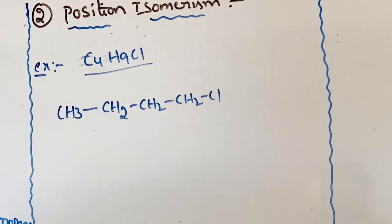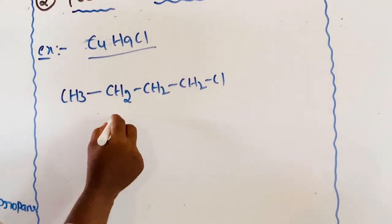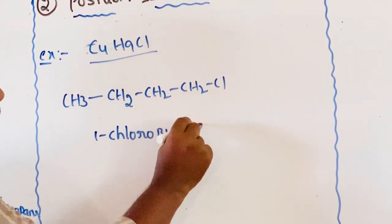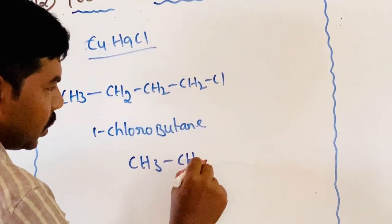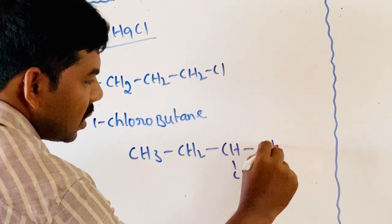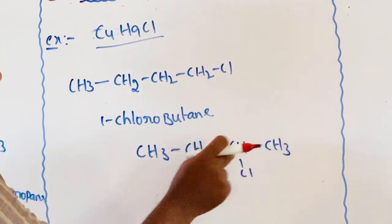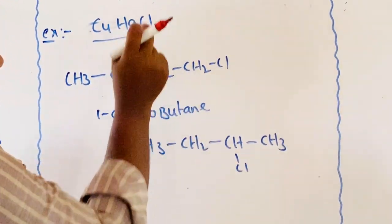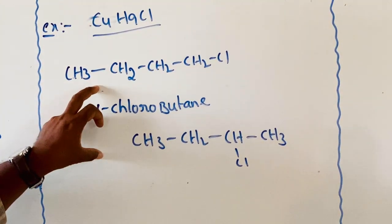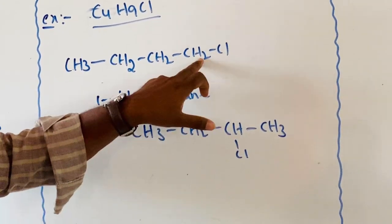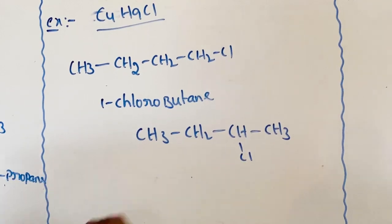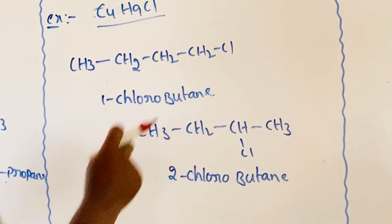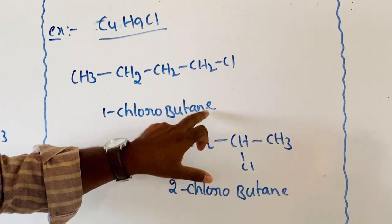Example: C4H9Cl molecular formula. First structure has chlorine on the first carbon — this is 1-chlorobutane. Second structure: CH3-CH2-CHCl-CH3, same 4 carbons and C4H9Cl molecular formula, but chlorine is on the second carbon — this is 2-chlorobutane. The substituent position is different — this is position isomerism.